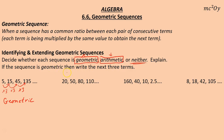It also says if it's geometric, write the next three terms. If we continually multiply by 3, 135 times 3 is 405, 405 times 3 is 1,215, and 1,215 times 3 is 3,645.